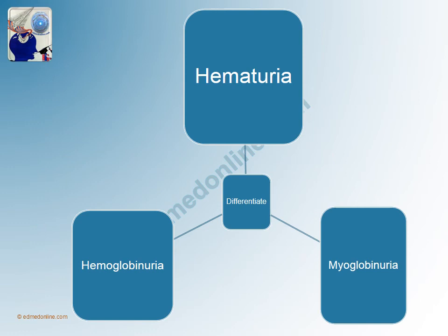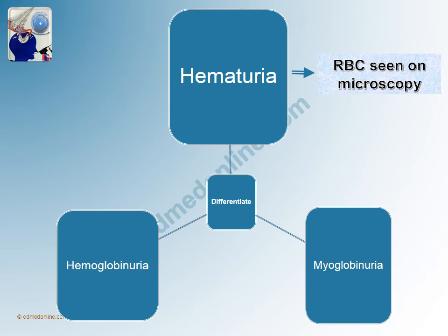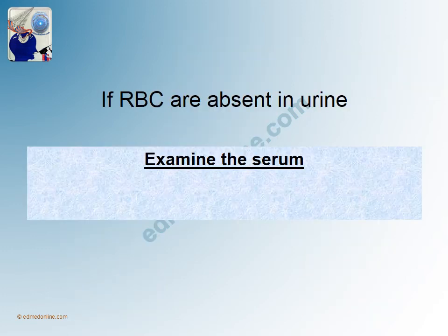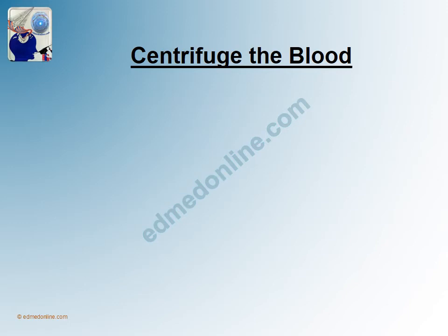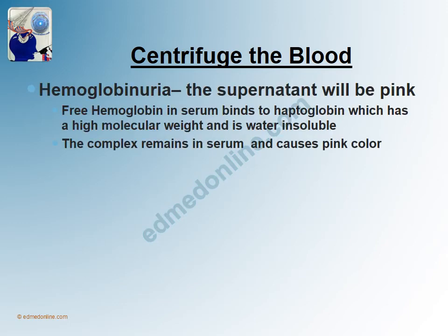If there is a positive dipstick test, we need to distinguish hematuria from hemoglobinuria and myoglobinuria. Hematuria is easy to diagnose because RBCs will be seen on urine microscopic examination. If RBCs are absent in urine and the dipstick test is positive, the next step is to examine the serum — centrifuge the blood. In hemoglobinuria, the supernatant will be pink, because free hemoglobin in the serum binds to haptoglobulin, which has a very high molecular weight and is water insoluble, so this complex remains in the serum causing pink discoloration.